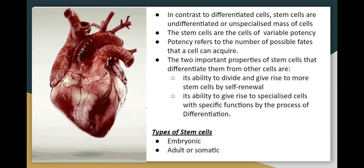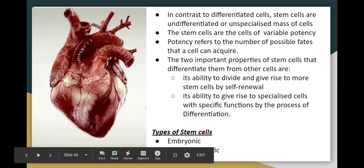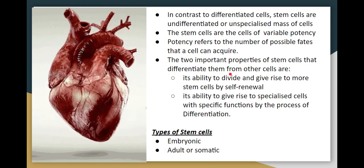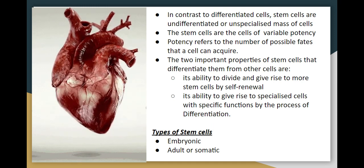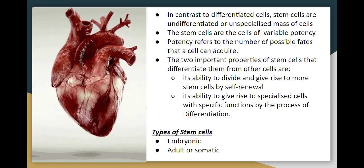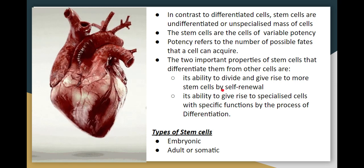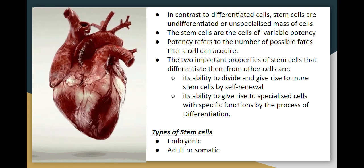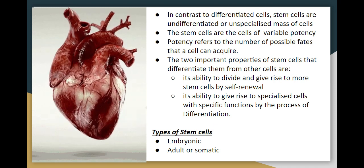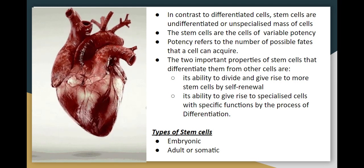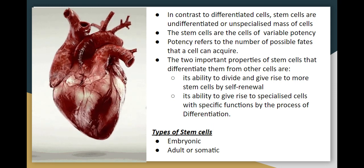Opposite to differentiated cells are undifferentiated cells — these are stem cells. Stem cells have variable potency, which refers to the number of possible fates that a cell can acquire. Stem cells have two important properties that differentiate them from other cells: self-renewal, where stem cells divide to produce new stem cells, and differentiation, where stem cells develop into specialized cells with specific functions. There are two types: embryonic stem cells and adult stem cells, which will be covered in the next part.